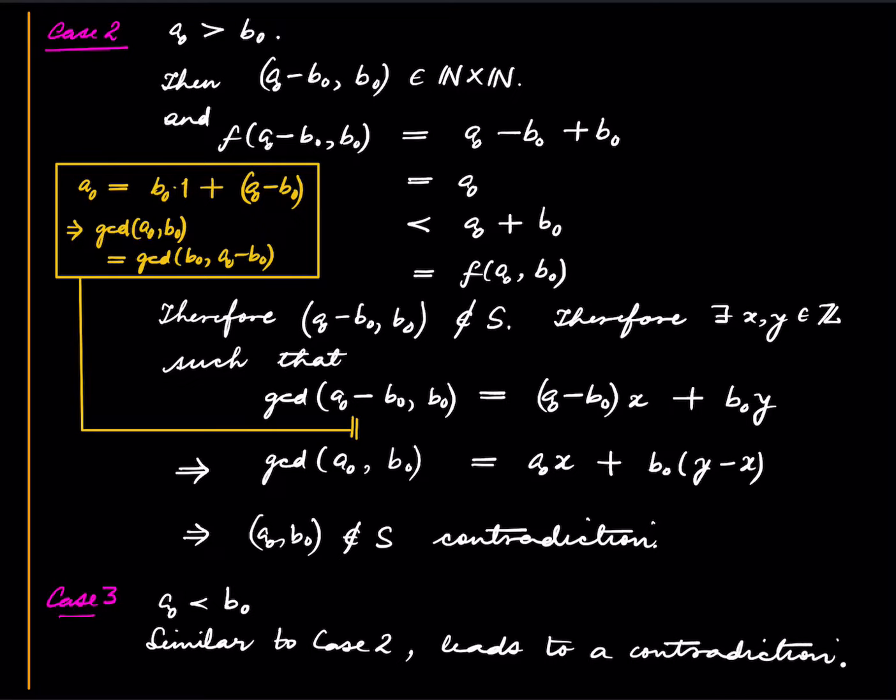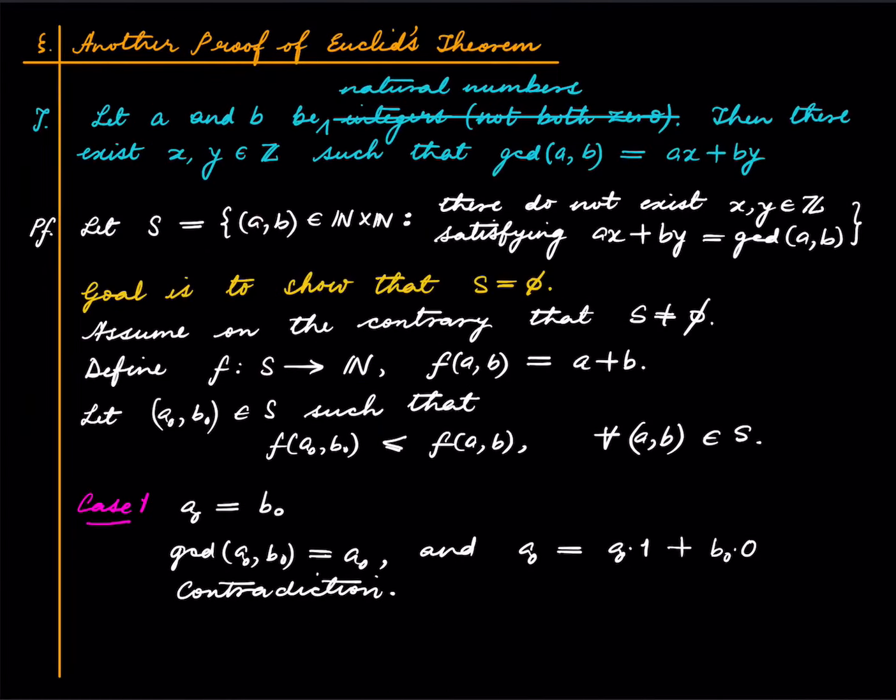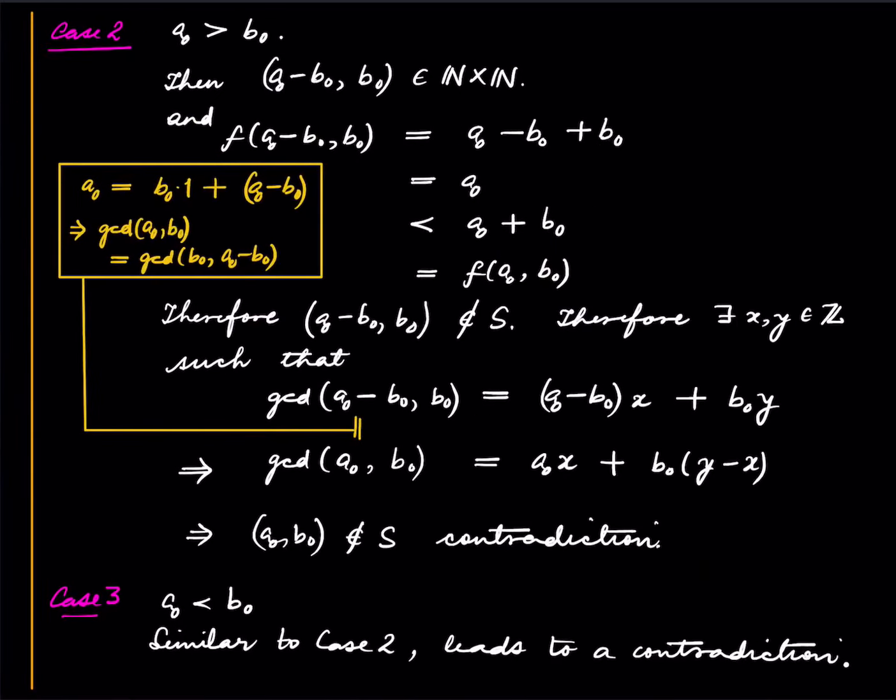So basically in all three cases we have a contradiction, and therefore our assumption that S is not empty must be false. Therefore S is empty and we are done. So exactly parallel to the alternate proof of the division with remainder. And again, I find this somewhat more natural to me; maybe you find the previous proof more natural, that's completely okay. Anyway, I wanted to share this. So as usual, like, comment, share, subscribe. I also have Patreon, the link is in the description below. Thank you for listening and I will see you next time.